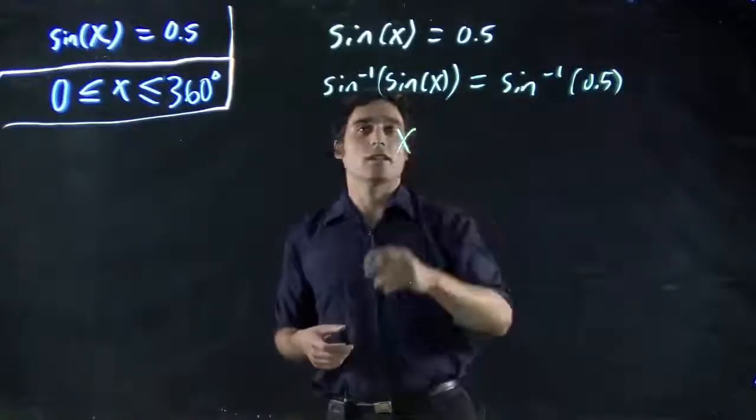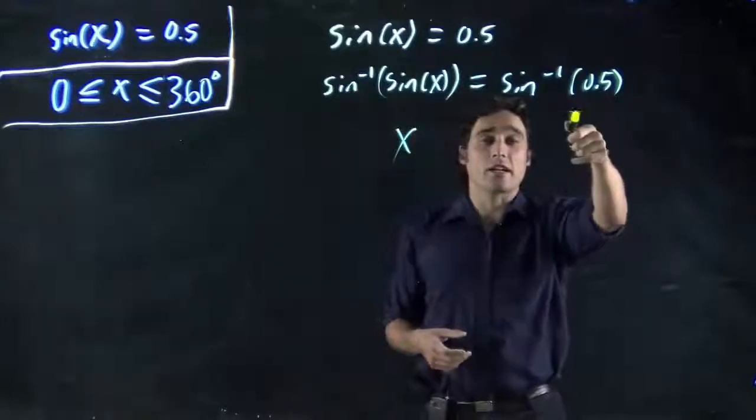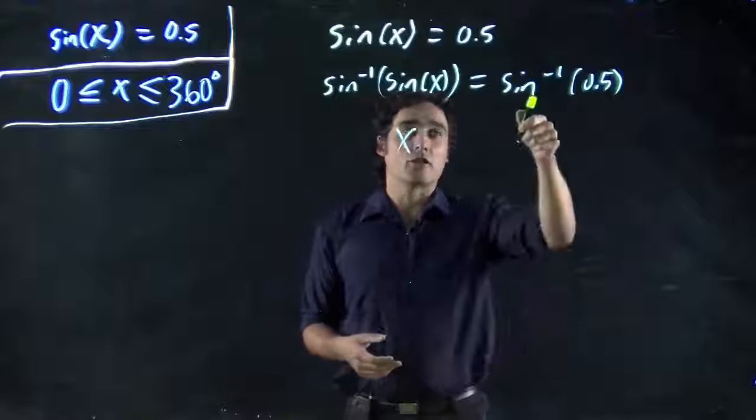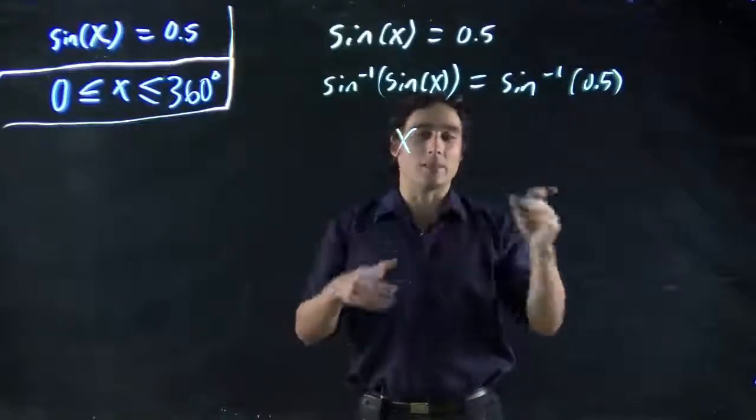And what we're left with is x on the left-hand side. And we punch it in our calculator. Sine to the minus 1 of 0.5. Again, there should be a button like this. Sine.